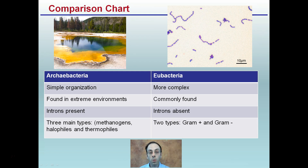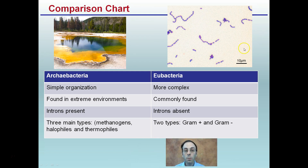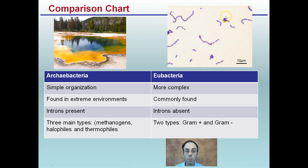Moving over now to Eubacteria — they can be a little more complex and a little more common than Archebacteria. Introns are absent; they're spliced out. There are two main types: Gram-positives and Gram-negatives. Gram-positives are recognized by their purple color, while Gram-negatives would appear pinkish-red.